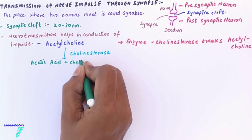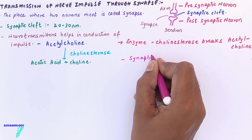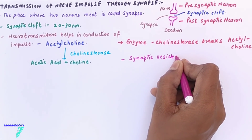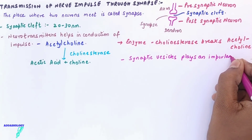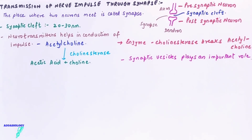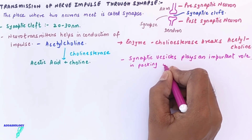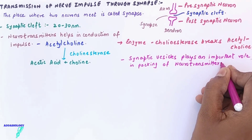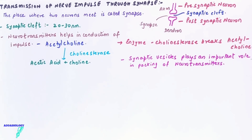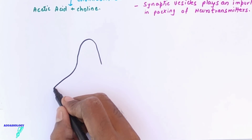Acetylcholine is the neurotransmitter that helps in the transmission of impulse from one neuron to another. Cholinesterase is the enzyme that breaks acetylcholine into acetic acid and choline. Synaptic vesicles play a very important role in the transmission of impulse, because the neurotransmitters are chemicals that get packed into these vesicles.